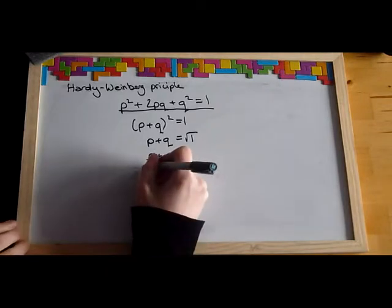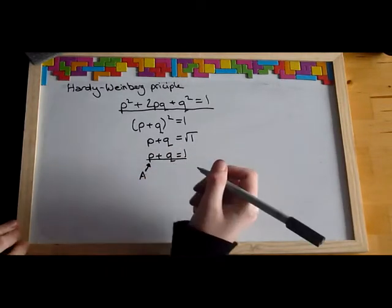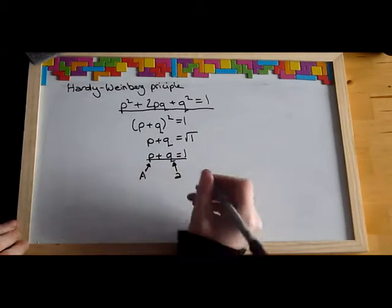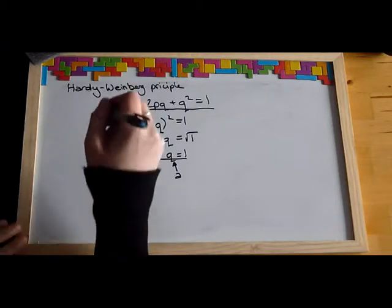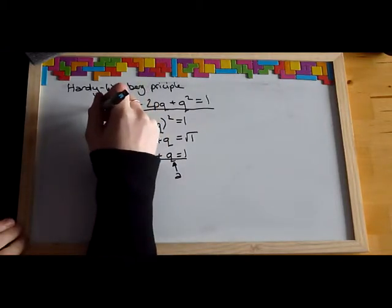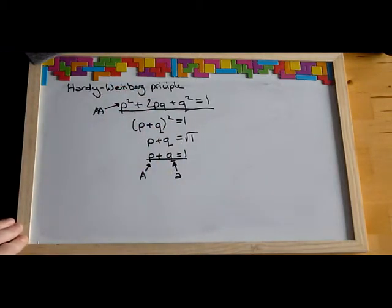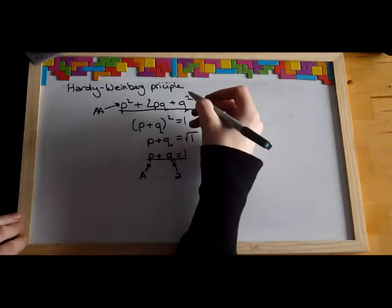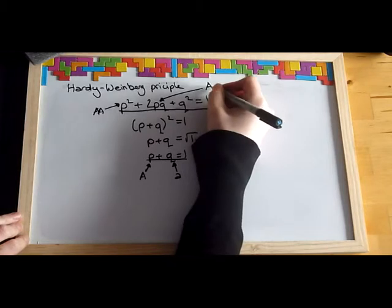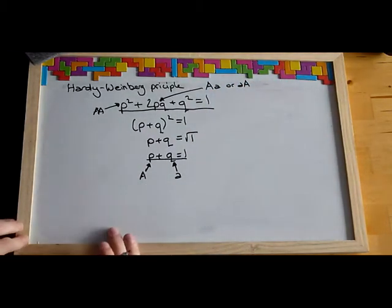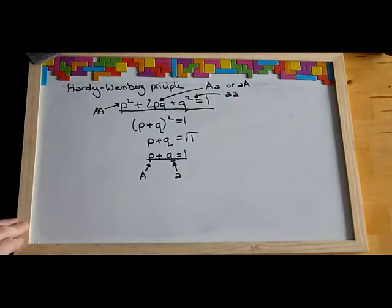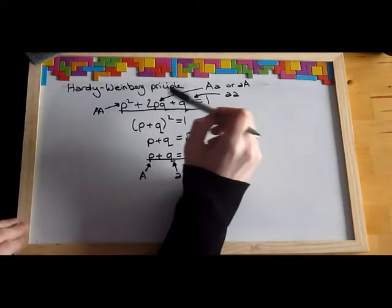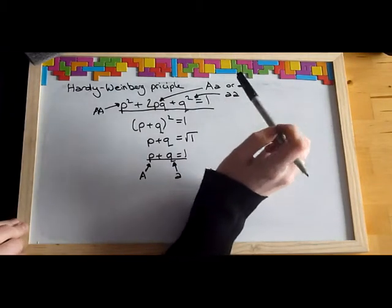P is equal to the frequency of the dominant allele — capital A — and Q is the frequency of the recessive allele — lowercase a. P squared is equal to the frequency of the homozygous dominant genotype, so P squared equals AA. 2PQ is equal to the frequency of the heterozygous genotype, and Q squared equals the frequency of the homozygous recessive genotype, so Q squared equals aa. Both P squared and 2PQ will have the dominant phenotype, and Q squared will have the recessive phenotype.